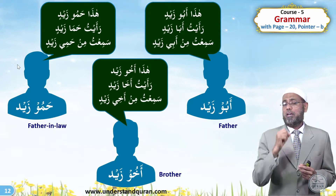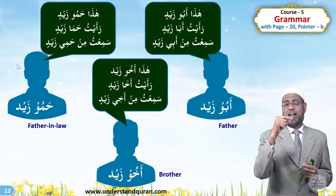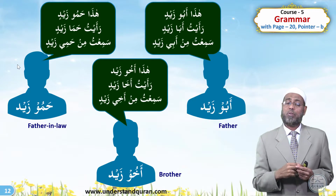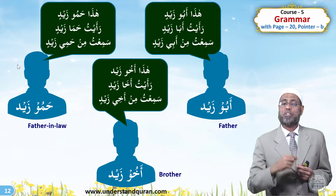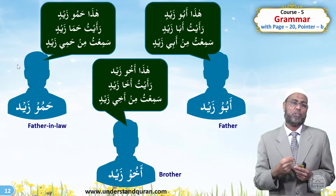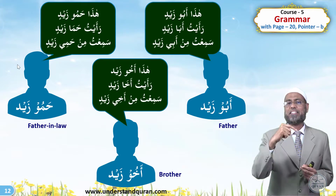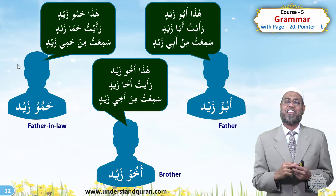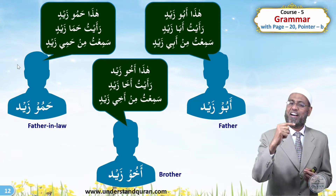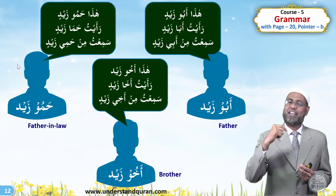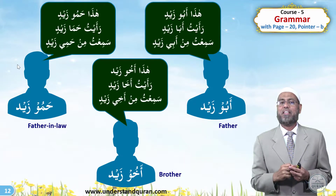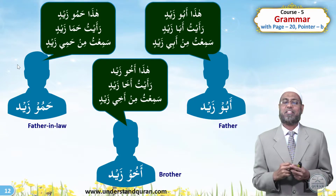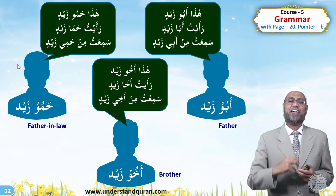Let's take Akhu: Akhu, Akha, Akhi. So: Hada Akhu Zayd — this is the brother of Zayd. Ra'aytu Akha Zayd — I saw the brother of Zayd. Sam'atu min Akhi Zayd — I heard from the brother of Zayd, because min is a preposition.